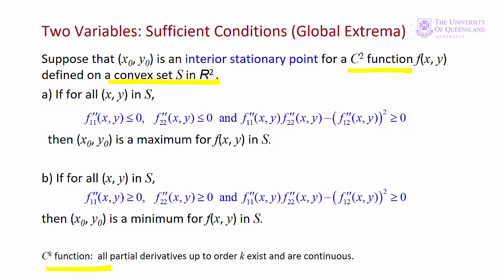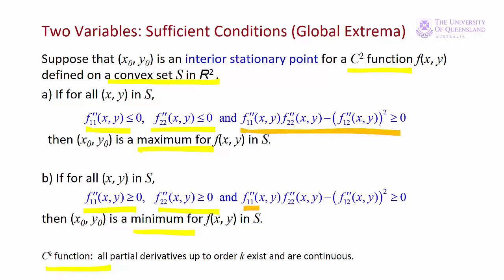We have a general definition: given a point x₀, y₀ that's an interior stationary point in a convex set S (the domain of the function), the conditions for a maximum are that f₁₁″ and f₂₂″, the second order partials, are both less than or equal to zero. For a minimum, both partials are greater than or equal to zero. These are analogous to the univariate case. There's also one more condition, the same for both cases, which we'll revisit when discussing local extreme points in Module 3.